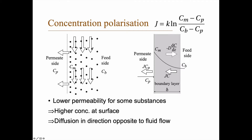Further from the membrane the concentration is lower, and closer to the surface the concentration is higher, since the liquid can pass through but the particles cannot. This creates a concentration gradient, then a jump in concentration to the permeate side — where the concentration might be zero or some higher value. We have a flux towards the membrane, but also diffusion by random movement of molecules away from the boundary.